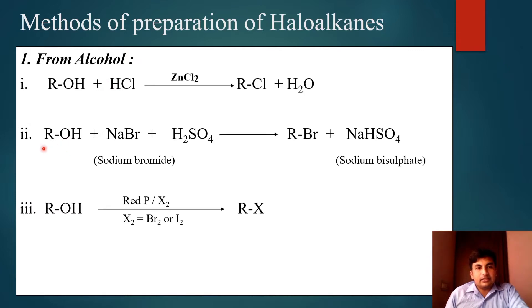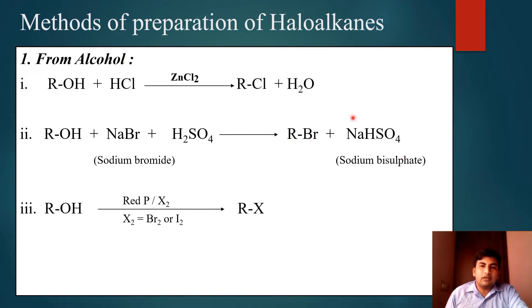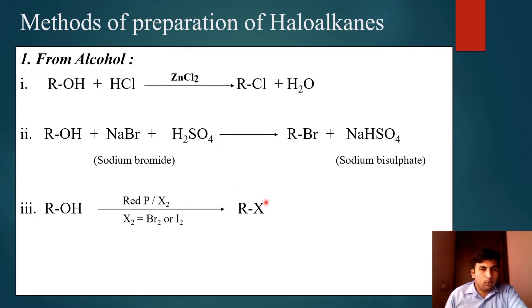The second method: alcohol is treated with sodium bromide in the presence of H₂SO₄ (sulfuric acid). The corresponding alkyl bromide is formed along with sodium bisulfate. The third method: alcohol is treated with red phosphorus and X₂ halogen — either bromine or iodine — and the corresponding alkyl halide is obtained.